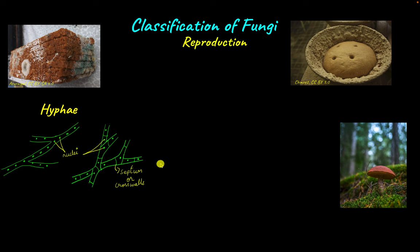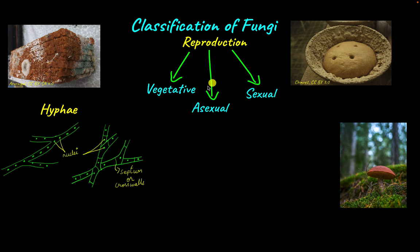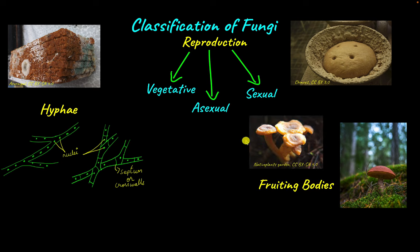Fungi are capable of reproducing vegetatively, asexually, and sexually. Asexual and sexual reproduction occurs through the formation of spores, which then germinate to produce new fungi. These spores are formed inside structures called fruiting bodies. The structure of the hyphae, the mode of reproduction, and the type and structure of the fruiting body produced form the basis of fungal classification.